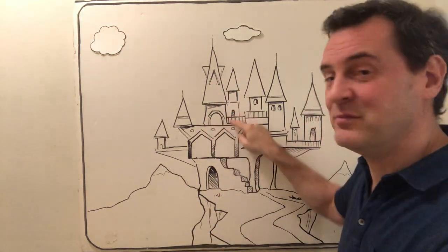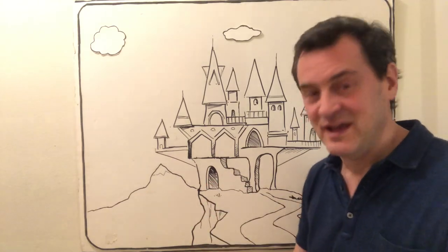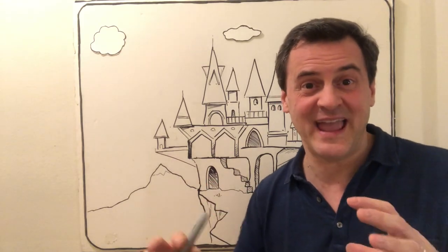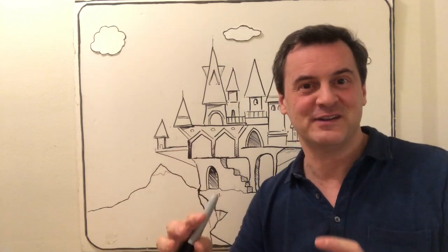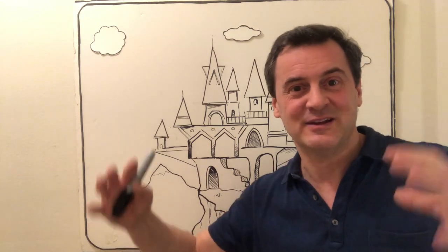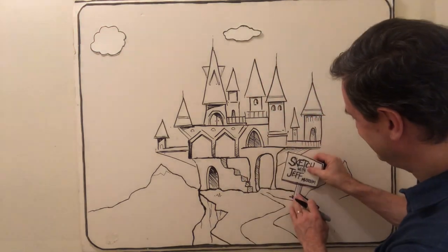Even though I've added more details, you can see it's really just shapes — triangles, rectangles, some curved shapes for the doors and windows. You can create or design a building any way you want. Just start with shapes. You could build rectangles on top of squares or triangles on top of circles. What is the name of this museum? Well, what else would it be but the Sketch with Jeff Museum — designed to house all of the artwork you've sent me. I'm really inspired!